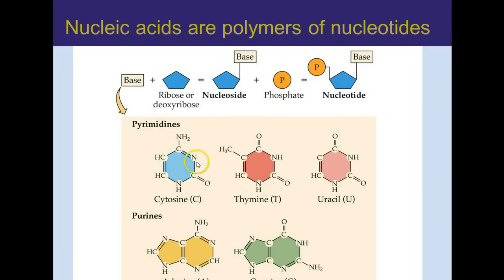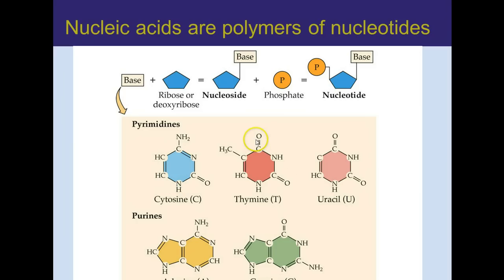You can see there's a nitrogen in this position and this position in all of the pyrimidines. What makes pyrimidines different from each other are other functional groups. There's an amino group attached to cytosine and thymine. There's a carbonyl in uracil. What makes uracil different from thymine is a methyl group attached to thymine on this carbon, where there's no methyl group in uracil.